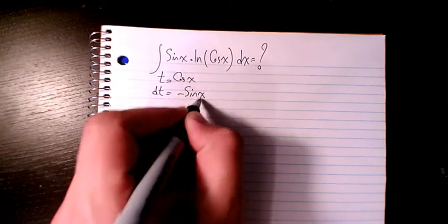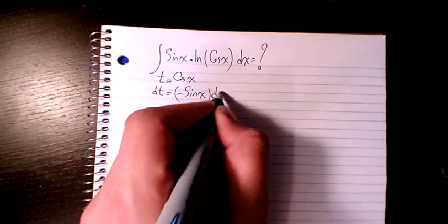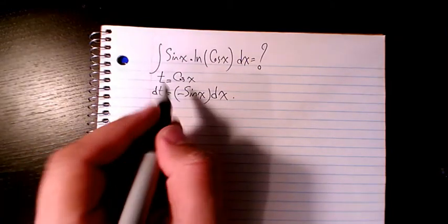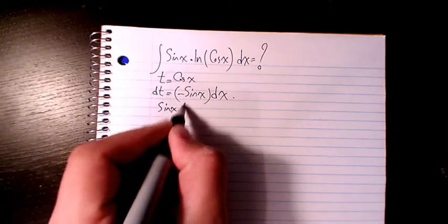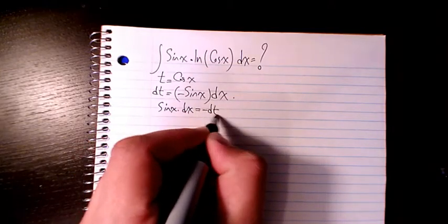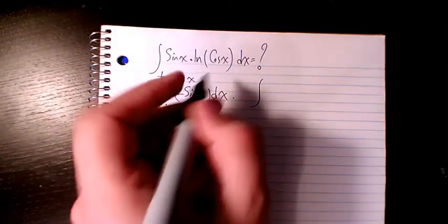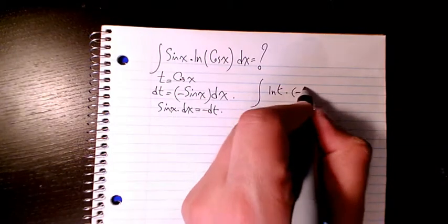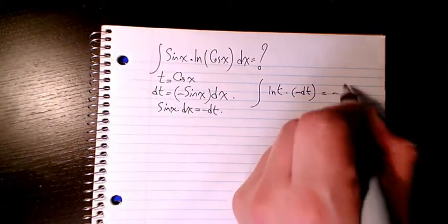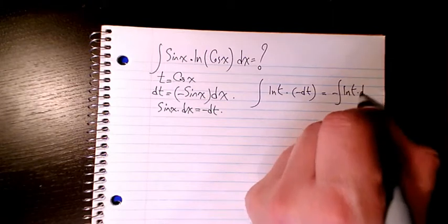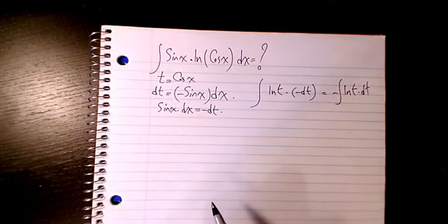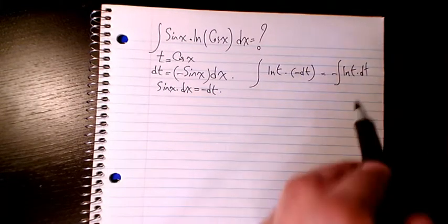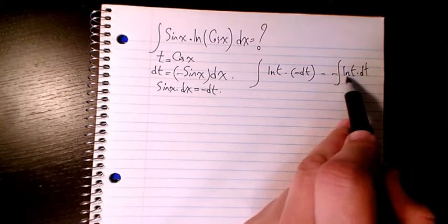So sine x times dx will be negative dt, so it will be ln(t) times negative dt. So it's going to be negative integral of ln(t) dt.